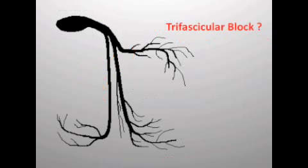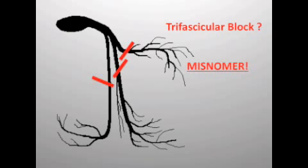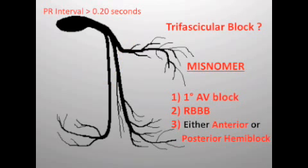So what's a trifascicular block? Well, that's actually a misnomer — that person would be dead, nothing would get through. So a trifascicular block is actually: number one, first-degree AV node conduction delay; number two, a right bundle branch block; and number three, either an anterior or posterior hemi block.